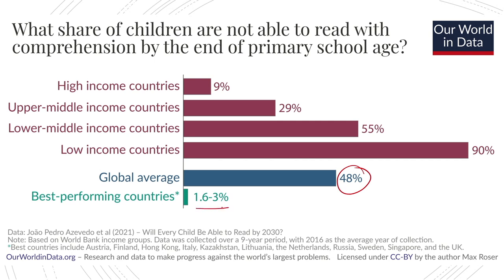Only 1.6 to 3% of children in the best-performing countries — including Austria, Finland, Hong Kong, Sweden, Singapore, and the UK — cannot read with comprehension. In high-income countries the figure is 9%, but in low-income countries it rises to 90%. There is a clear income and learning outcomes correlation, indicating that despite government spending on primary education, children in lower-income countries are not learning adequately, which probably has something to do with income.